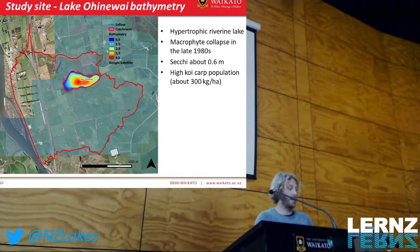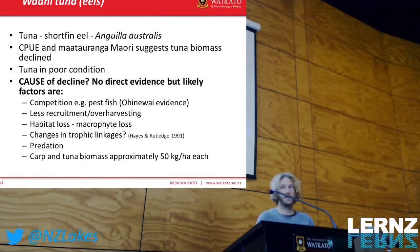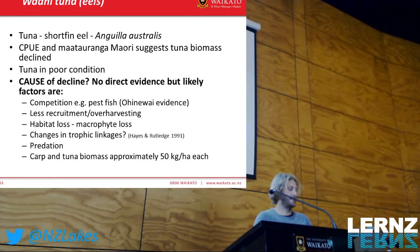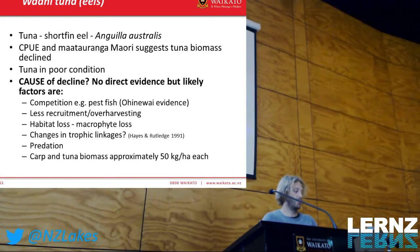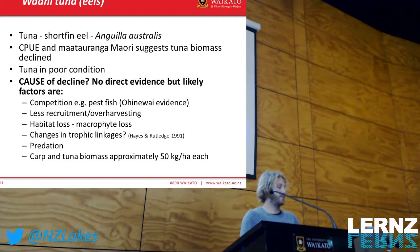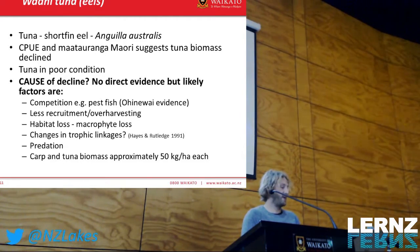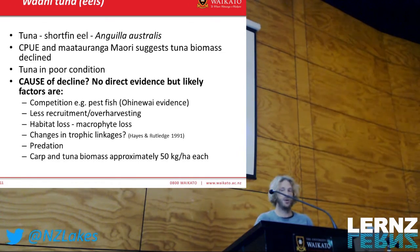Lake Lahi has also had macrophyte collapse; Secchi depth is really low at 0.6 meters. There's a lot of mātauranga that suggests tuna biomass has declined, and catch per unit effort also indicates decline. Causes are not entirely certain but could include competition — after large biomass of carp were removed from Lahi, eel biomass actually increased quite quickly. There's really good evidence that carp and eels are competitors, using some of the same ecological niche and competing for food resources. There are also things like habitat loss, macrophyte loss, and changes in trophic pathways.